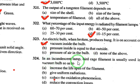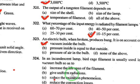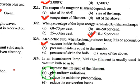A bird-cage filament is usually used in a vacuum bulb to give uniform radiation. So when a bird-cage filament is used inside an incandescent lamp, we get uniform radiation. Answer is option B.